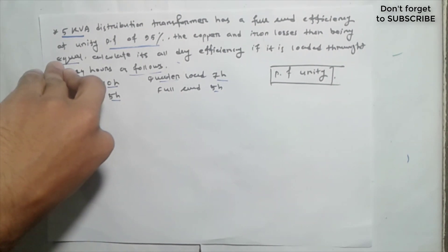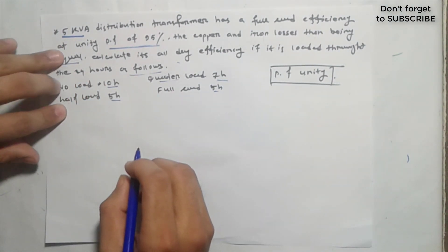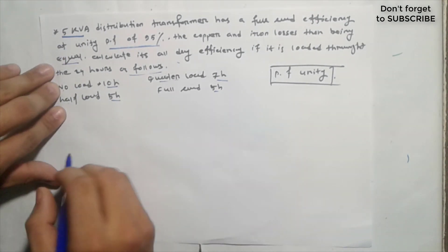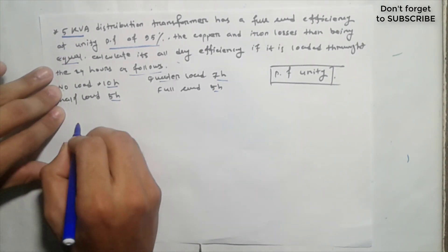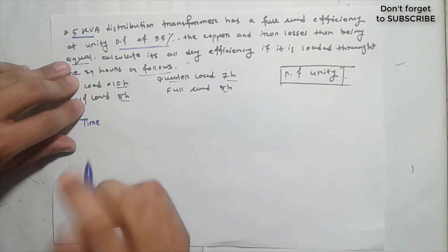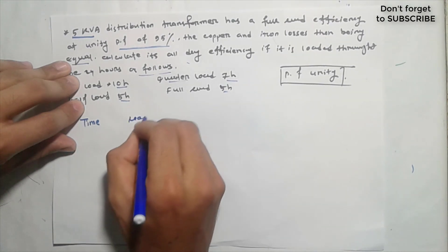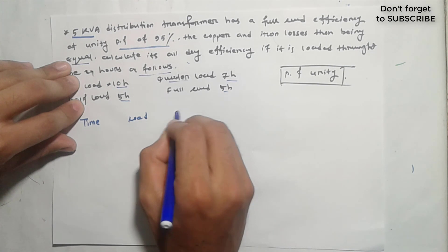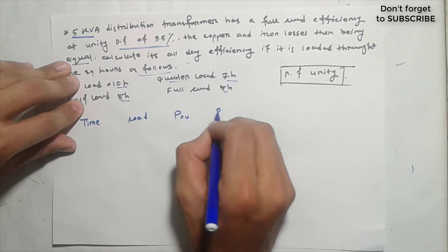I am going to start solving the problem using a chart. We will set up the table with columns for load, time, copper loss, and iron loss. The iron loss is fixed regardless of load, while the copper loss varies.